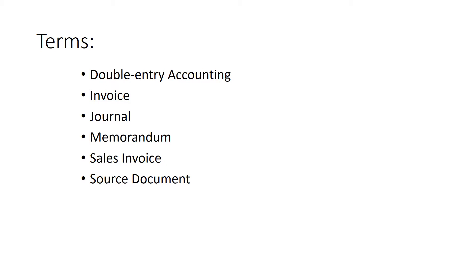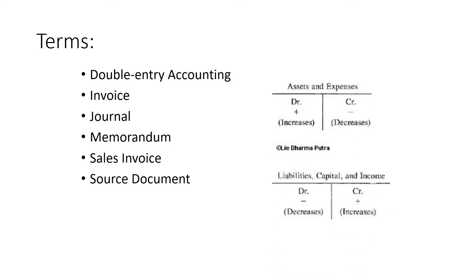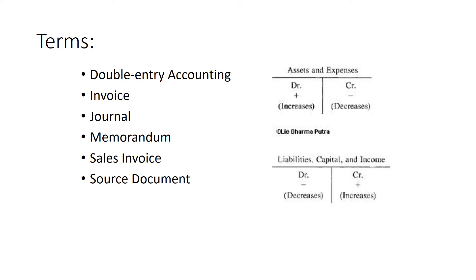Some terms before we get started. Double-Entry Accounting is basically what we will be doing, which means for every transaction there will be a minimum of two entries. Sometimes there will be more, but a minimum of two entries. If you remember from last chapter, with those two entries, one will be a debit and one will be a credit.